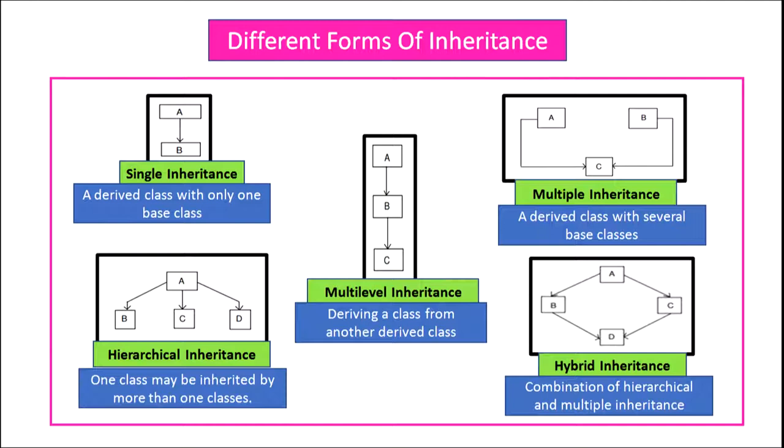Hybrid inheritance is a combination of hierarchical and multiple inheritance. You can see in the figure that A is the base class, B and C are the child classes of the base class A, and D is a child class for which B and C are the base classes. So this is hybrid inheritance.